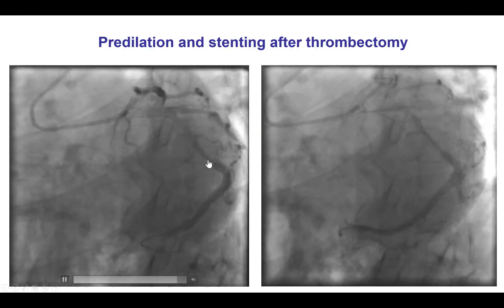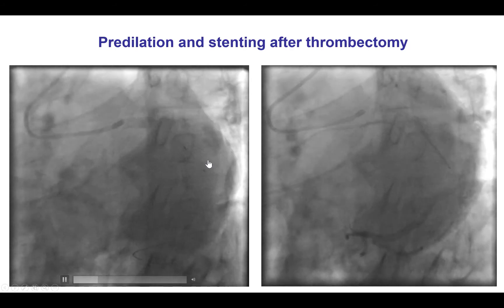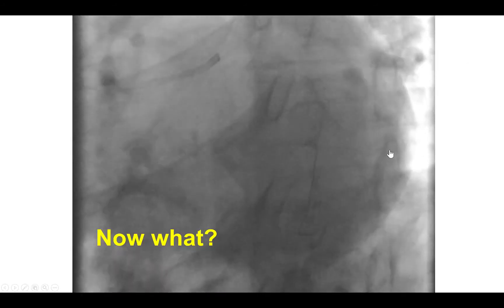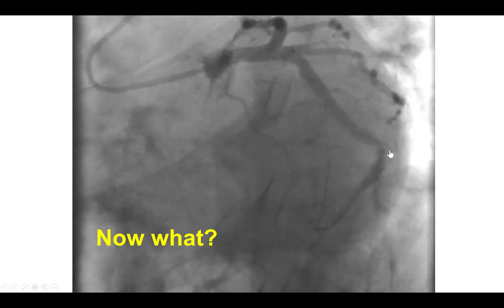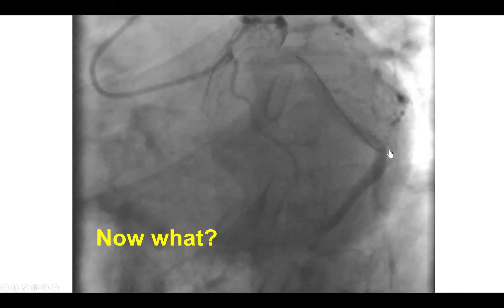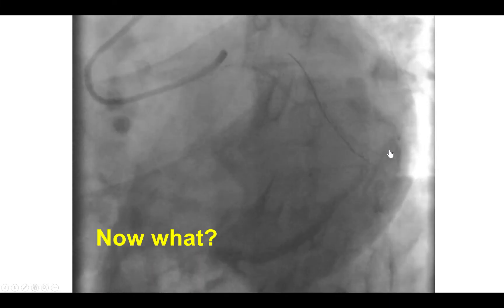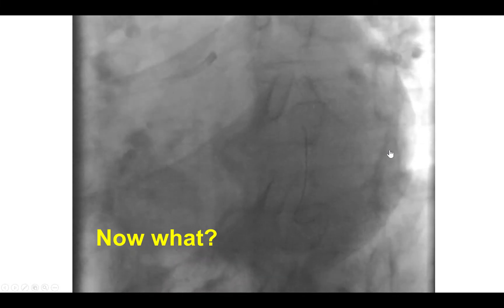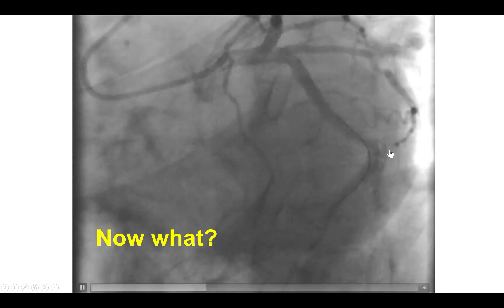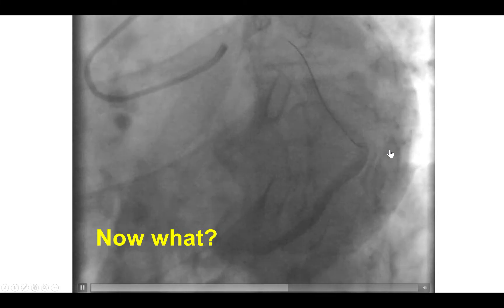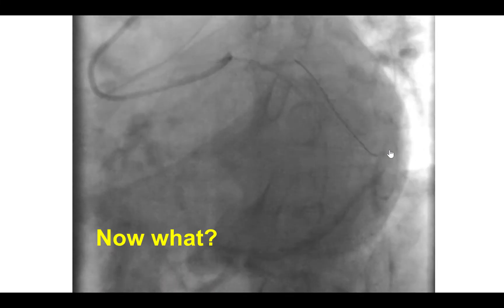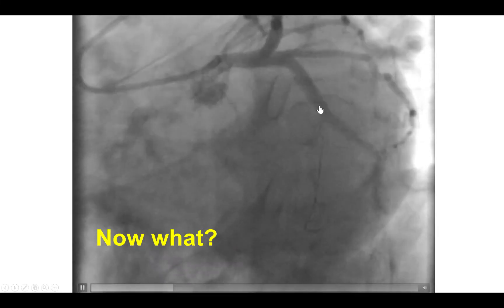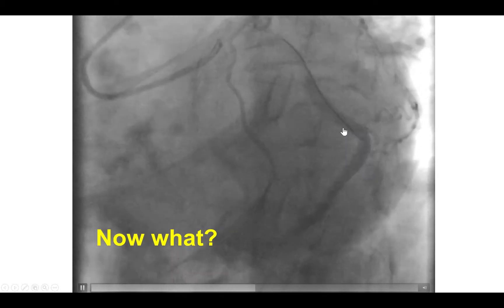We then proceeded with thrombectomy of the circumflex lesion, followed by predilation as well as stenting. However, after stenting, the patient developed significant chest discomfort and ST-segment re-elevation. What was found was slow flow, presumably due to distal embolization from the thrombotic lesion in the circumflex, even though we had predilated and had also used thrombectomy.